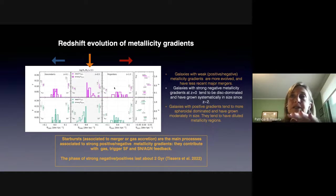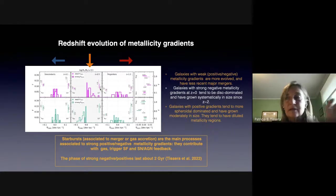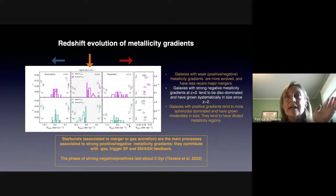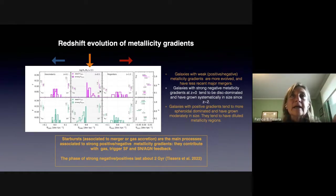The ones with positive metallicity gradients tend to be more spheroid-dominated. You can see the disk-to-total mass ratio: on average they have about 0.22, whereas galaxies with negative metallicity gradients have an average of 0.46 disk-to-total ratio. So the galaxies with positive metallicity gradients have a larger bulge compared to the disk. They also tend to have a larger spread of metallicity gradient at higher redshift, and they converge to a distribution comparable to the negative metallicity gradient case.